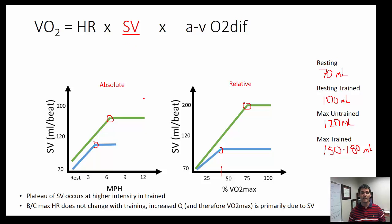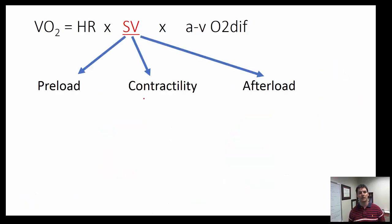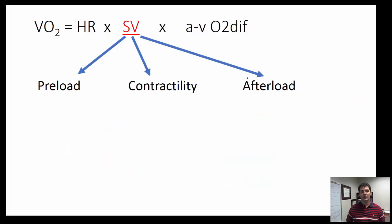To put some numbers to it: maximal stroke volume for an untrained individual is roughly 120 milliliters. For trained individuals, values of 150 to 180 milliliters and even up to 200 milliliters have been reported. So the key takeaway is that most of our improvements in cardiac output come from improvements in stroke volume, and breaking down the Fick equation this way allows us to focus on stroke volume's three main determinants: preload, contractility, and afterload.